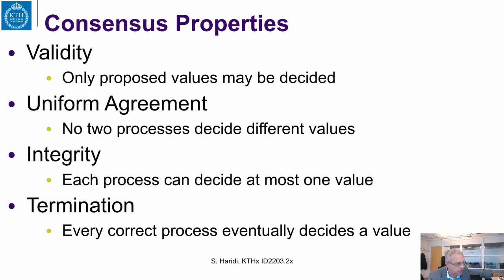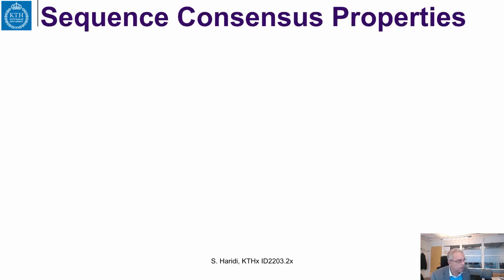As a reminder, in single value consensus: Validity says that the proposed values are the only ones that could be decided. Uniform agreement says no two processes decide different values. Integrity says each process can decide at most once. And termination says each process eventually decides a value.